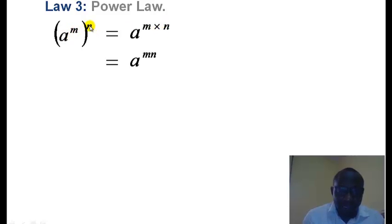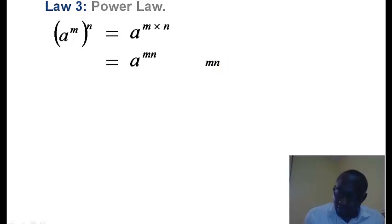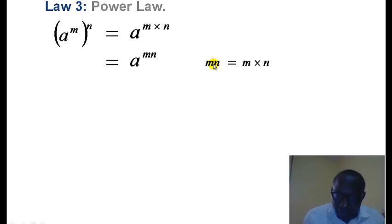In this case, m and n are the indices involved, and a is the base number. The resulting transformation gives us a raised to power m multiplied by n, which is the same as a raised to power mn, since m multiplied by n is mn. It is important to note that mn equals the product of m and n — whenever variables are put together without any mathematical operation between them, the default operation is multiplication.